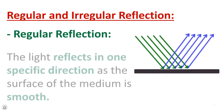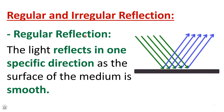What is the difference between regular and irregular reflection? In regular reflection, the light reflects in one specific direction, as the surface of the medium is smooth — not rough. As you can see in this figure, the light rays hitting the smooth surface all reflect in one specific direction, shown by the blue arrows. This is called regular reflection.